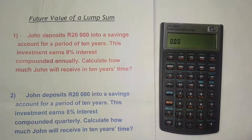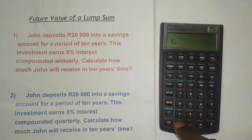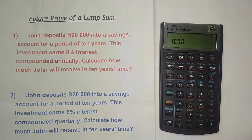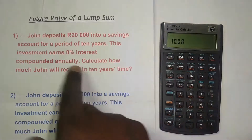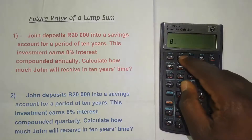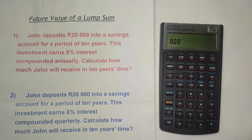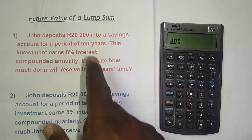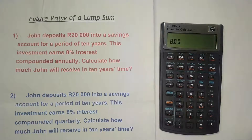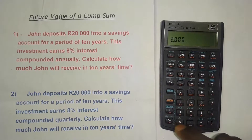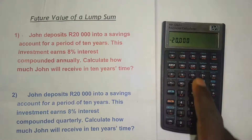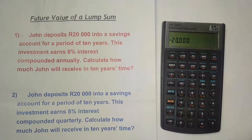Now I can do my calculation. Since it's compounded annually it's straightforward. I press 10 and then press N, because that's the number of compounding periods. Then I put in the interest rate — press 8 and then I/YR. Then I put in the money I'm depositing today, which is 20,000 rand, as the present value. I press 20,000 and before pressing PV I press the +/- key to make it negative.